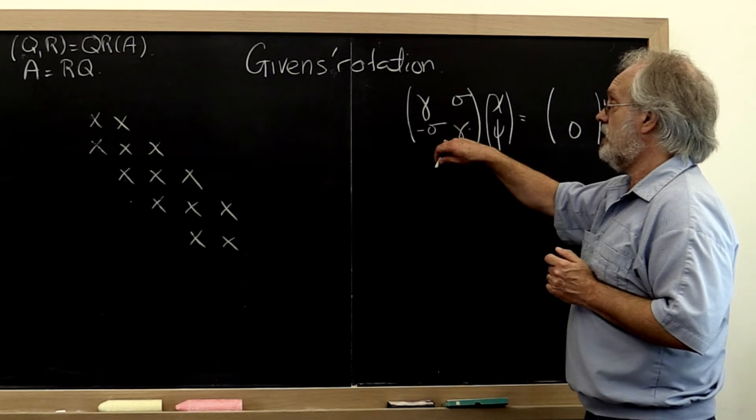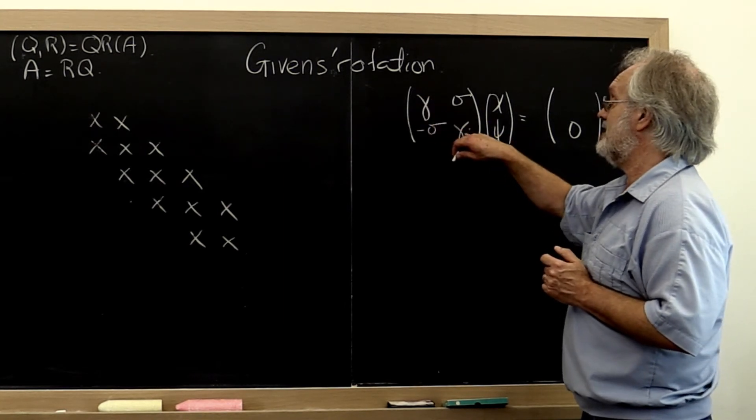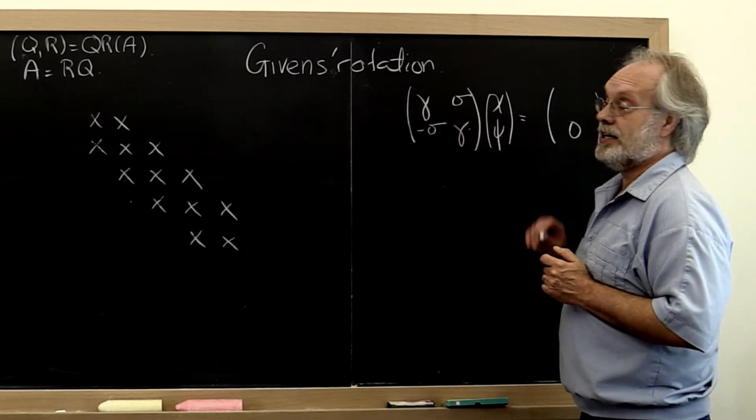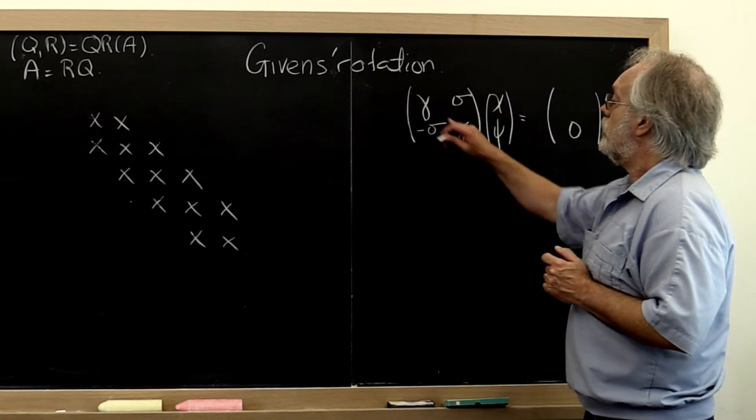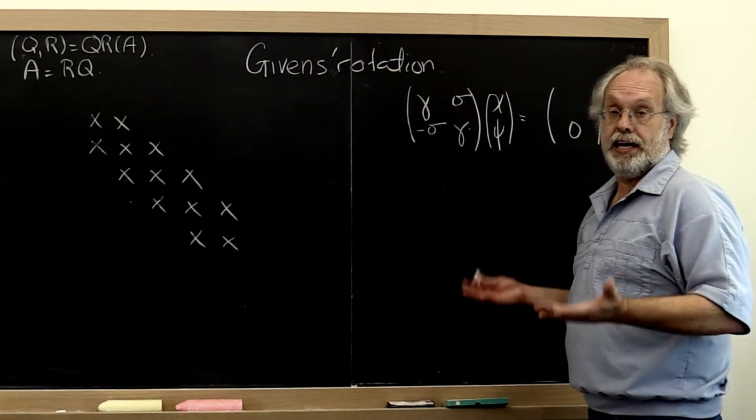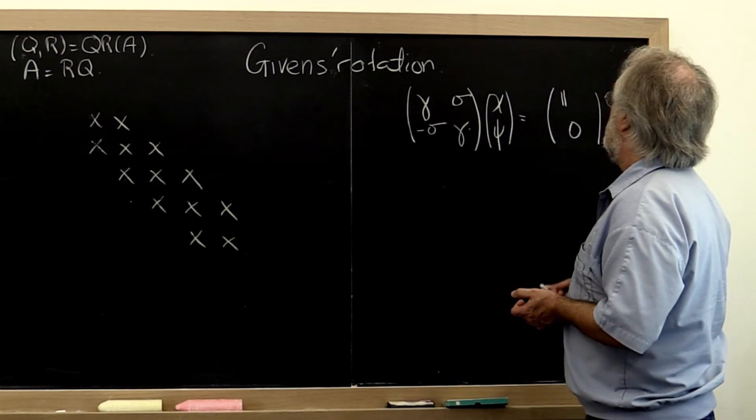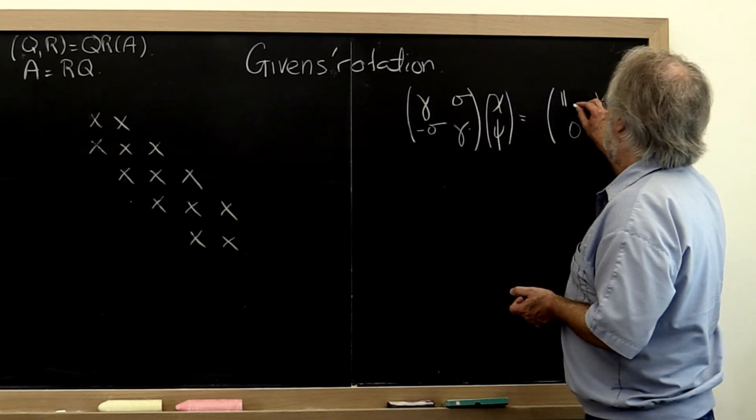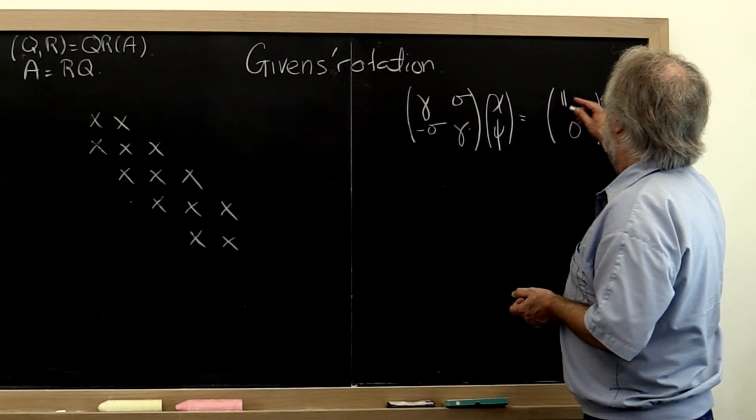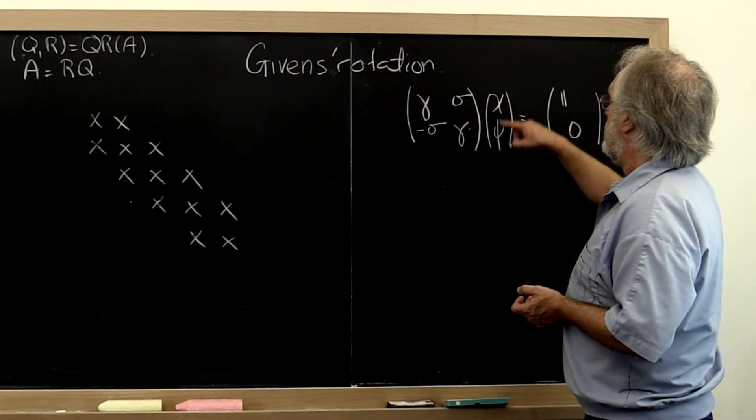But we saw that rotations, if these represent the cosine and sine of an angle, we know that rotations preserve length. And therefore we know that this first entry we can take to be the 2-norm of this vector right here.